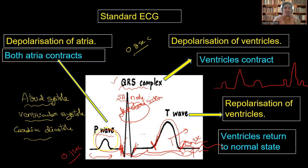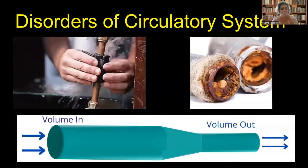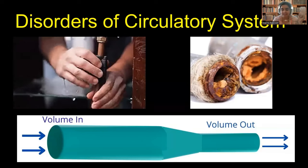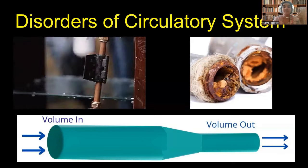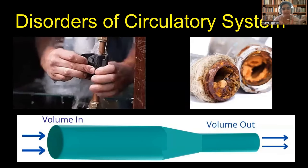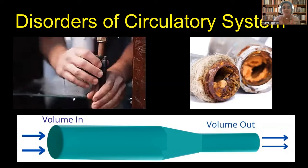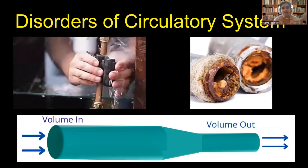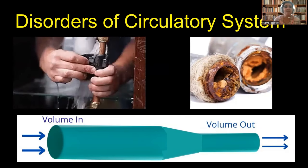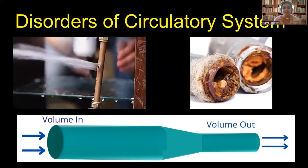Any deviation from these waves represents some abnormality in our heart. This is about the standard ECG. If it is not like that — any deviation from the ECG — we study it as disorders of the circulatory system. It may be because of several reasons.